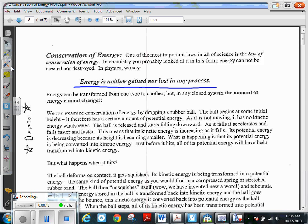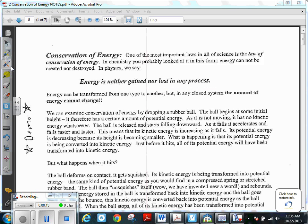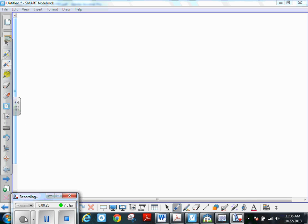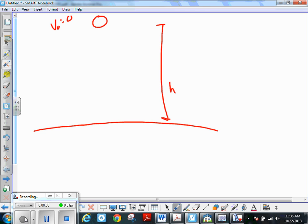So you're probably wondering what happens when we have a bouncy ball. Here's the floor, here's a bouncy ball with V sub not equals zero. Now it has a height above the floor, so it has a potential energy up here equal to mgh.